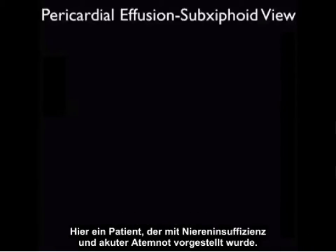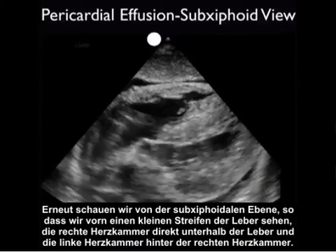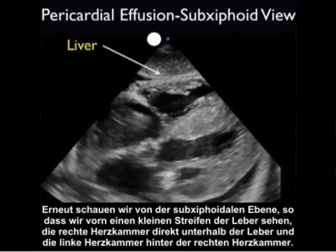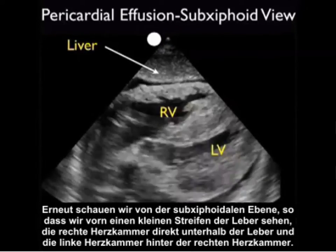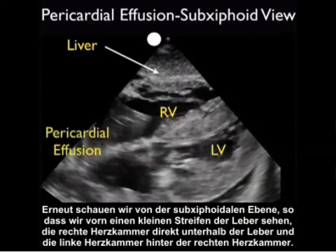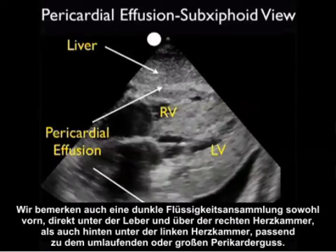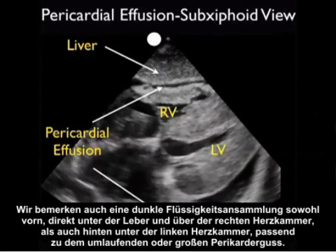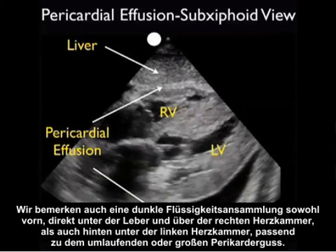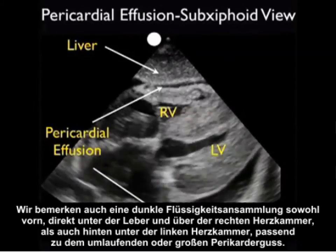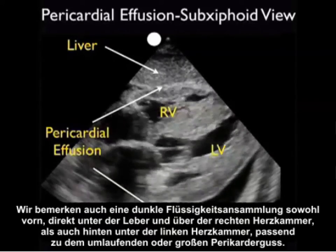Here's a patient who presented with renal failure and acute shortness of breath. We're again looking from the subxiphoid plane, so we see a little strip of the liver anteriorly, the right ventricle just below the liver, and the left ventricle seen posteriorly to the right ventricle. Notice how hypertrophic the walls of the left ventricle are on this patient. We also appreciate a dark fluid collection both anteriorly — just below the liver and above the right ventricle — and posteriorly below the left ventricle, consistent with a circumferential or large pericardial effusion.